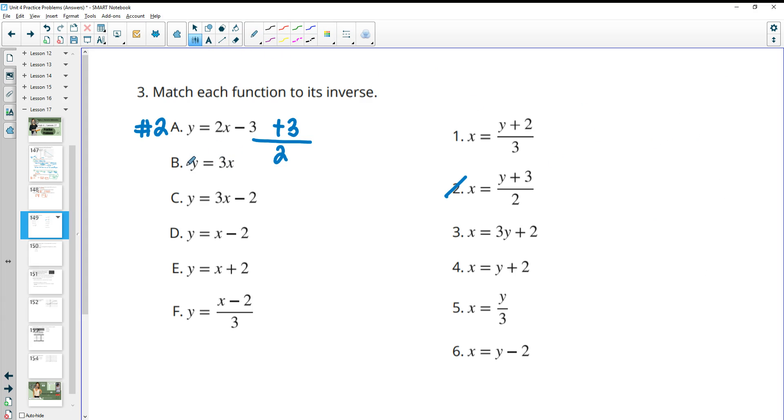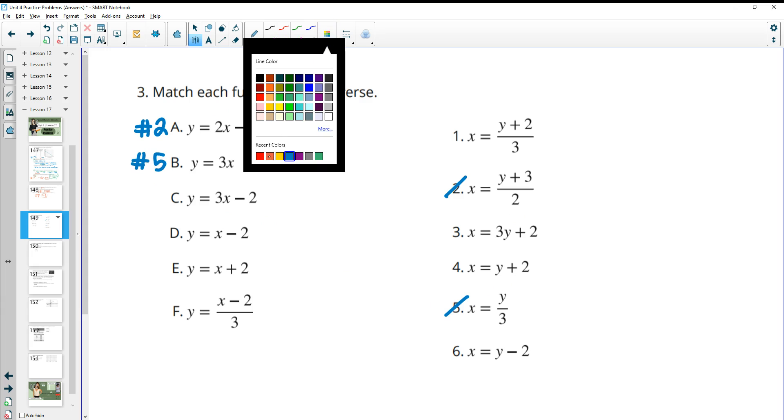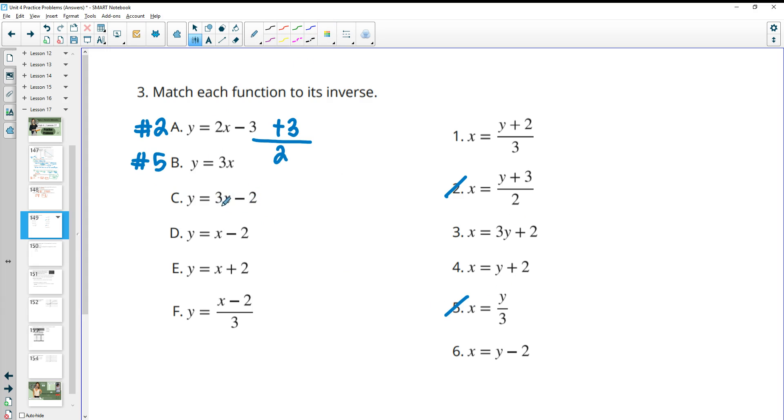So then this next one, all we're going to do is divide by 3. So we're just going to get y divided by 3, which is down here at number 5. Part C, we're doing 3 times x minus 2. So that means we're going to have to undo the minus 2 first by adding 2. Then we're going to need to divide by 3. So we're going to get y plus 2 divided by 3, which is number 1.